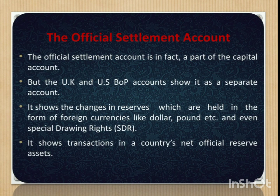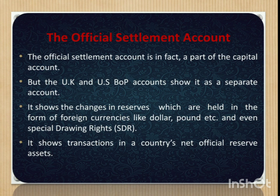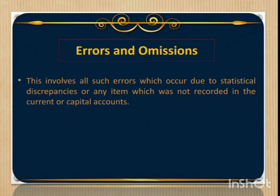Next, official settlement account. The official settlement account is, in fact, a part of the capital account. But the UK and US balance of payment accounts show it as a separate account. It shows the changes in reserves which are held in the form of foreign currencies like dollar, pound, etc., and even SDR — special drawing rights. It shows transactions in a country's net official reserve assets. Last, errors and omissions — this involves all such errors which occur due to statistical discrepancies or any item which was not recorded in the current or capital accounts.